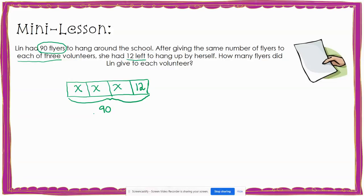When I look at my tape diagram, I see that I have three x's and one 12. These combine to make a total of 90. I can use this to write an equation: 3x plus 12 equals 90.